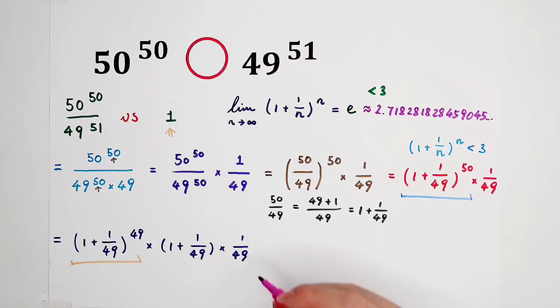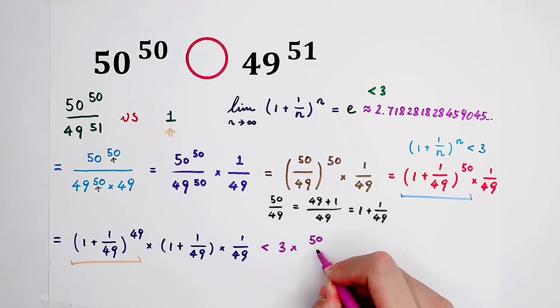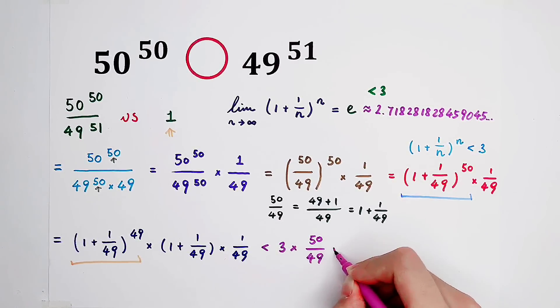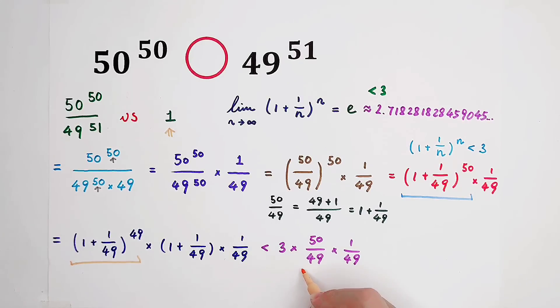...3 times 1 plus 1 over 49 equals 50 over 49, and then times 1 over 49. Calculate, calculate. Now I'm going to remind you, please don't calculate. 50 over 49, it is greater than 1.